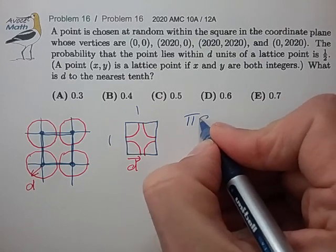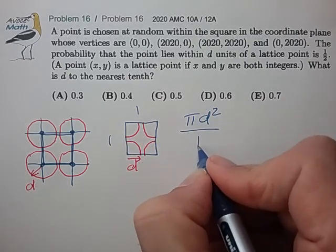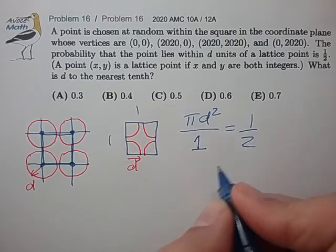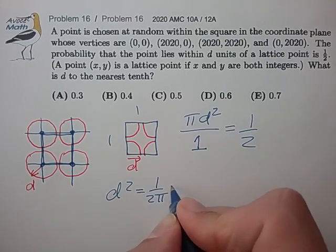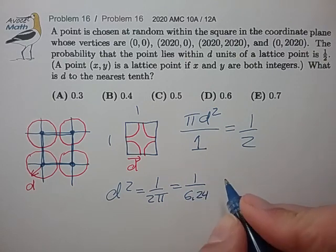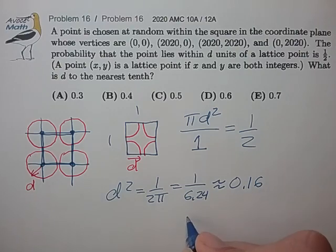So we have that pi d squared, adding up the four portions, divided by the area of the square is equal to one-half, from which d squared is equal to 1 over 2 pi. That's 1 over 6.24 approximately, and that's approximately 0.16.